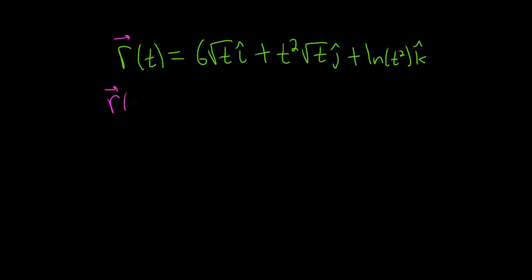So r of t is equal to... So before we differentiate this piece, it'll be beneficial to write the square root of t as t to the 1/2. So this is 6t to the 1/2 i-hat.